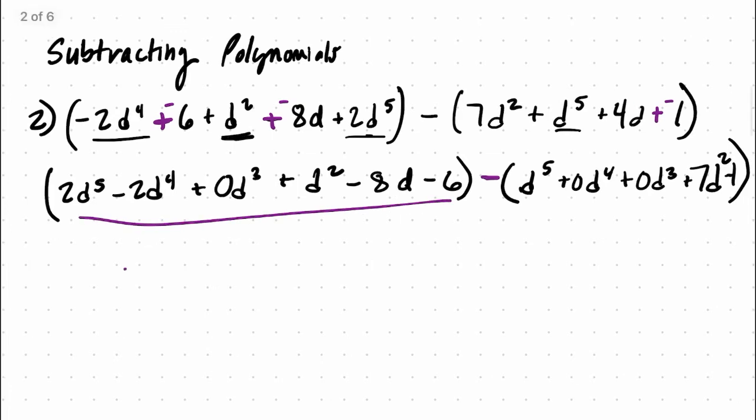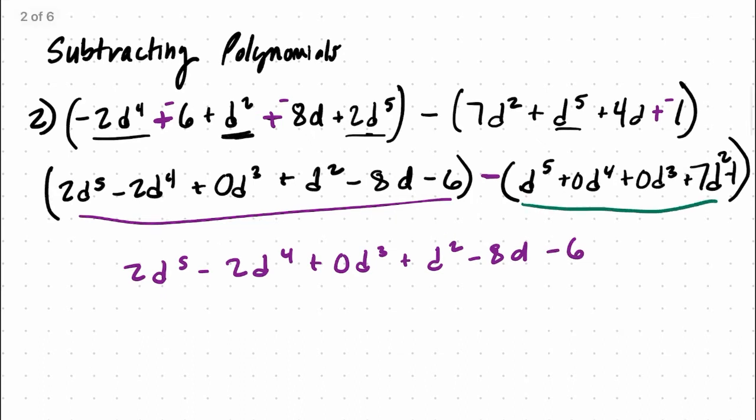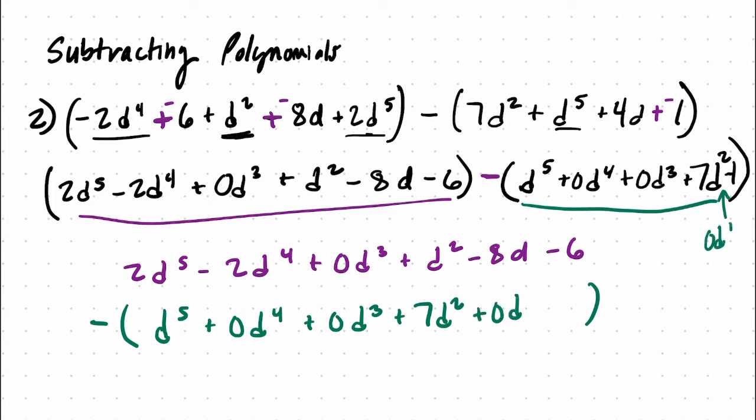So I'm going to rewrite it with my first polynomial as 2d to the fifth minus 2d to the fourth, plus 0d cubed plus d squared minus 8d minus 6. And then, I rewrite the second polynomial beneath it as a subtraction. So I write minus, and then I'm subtracting the whole thing. So I write d to the fifth, plus 0d to the fourth, plus 0d cubed, plus 7d squared. And then, I should have wrote in here a 0d to the first, and then minus 1.